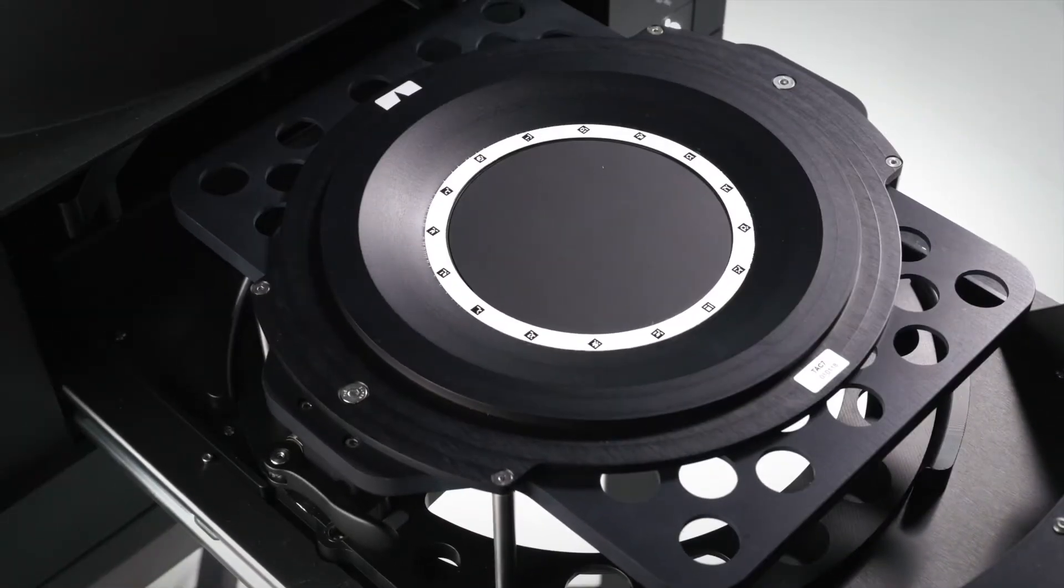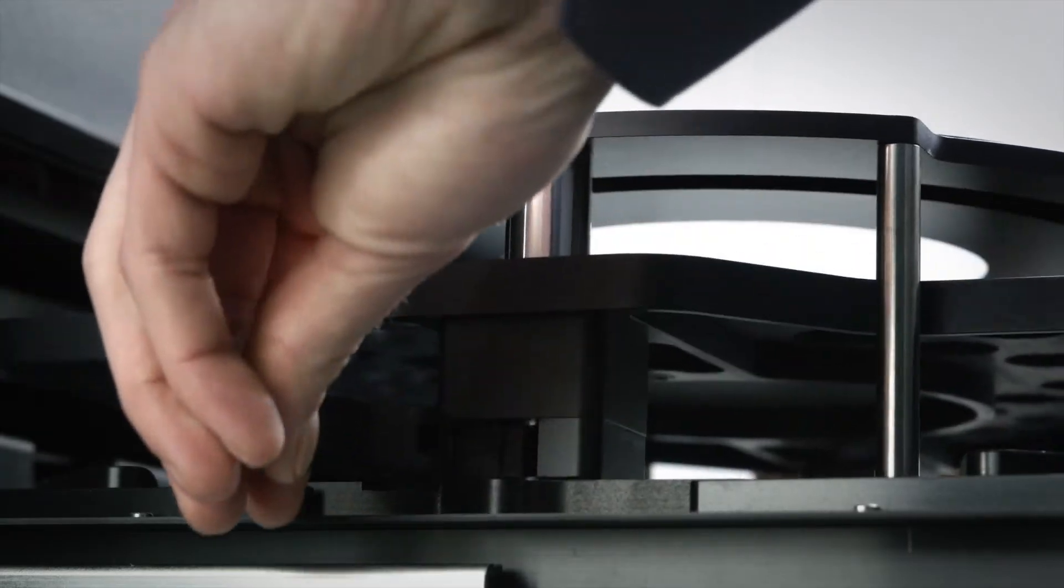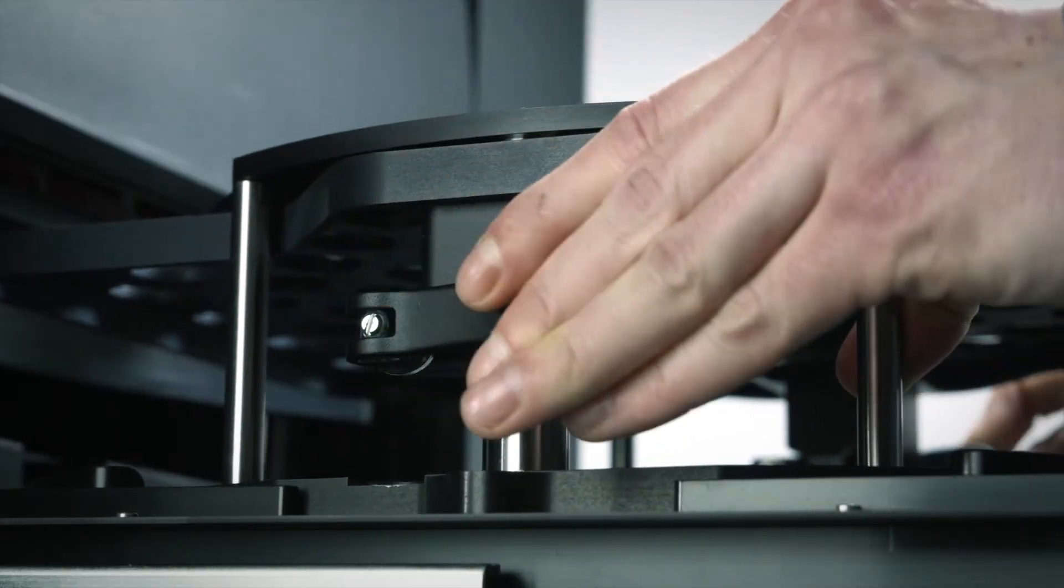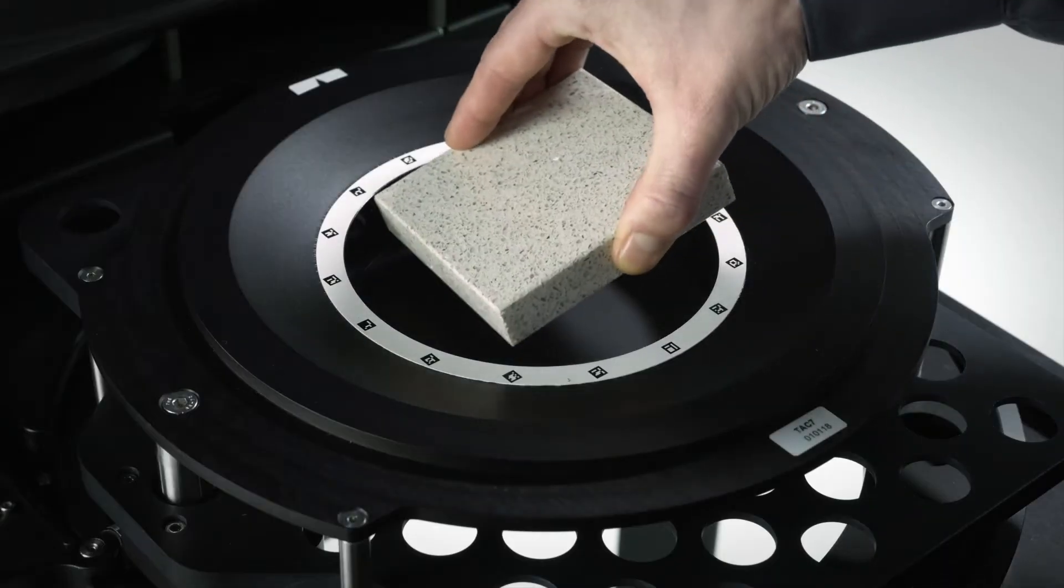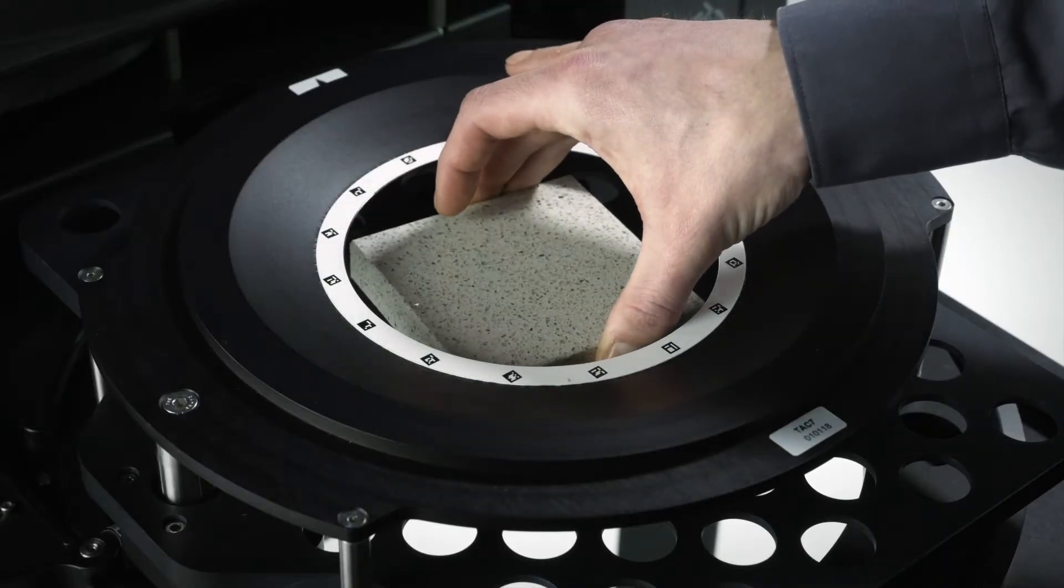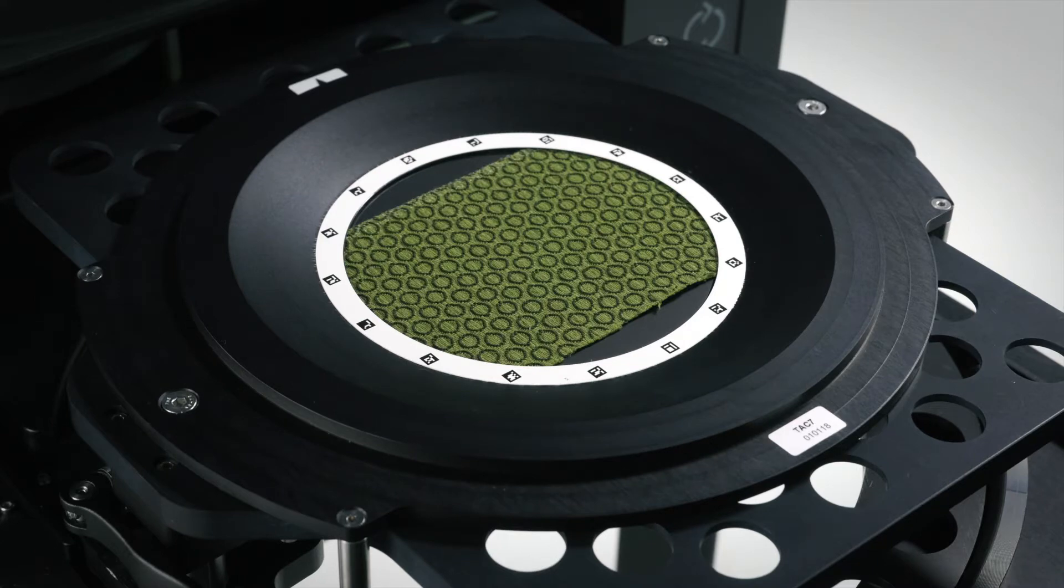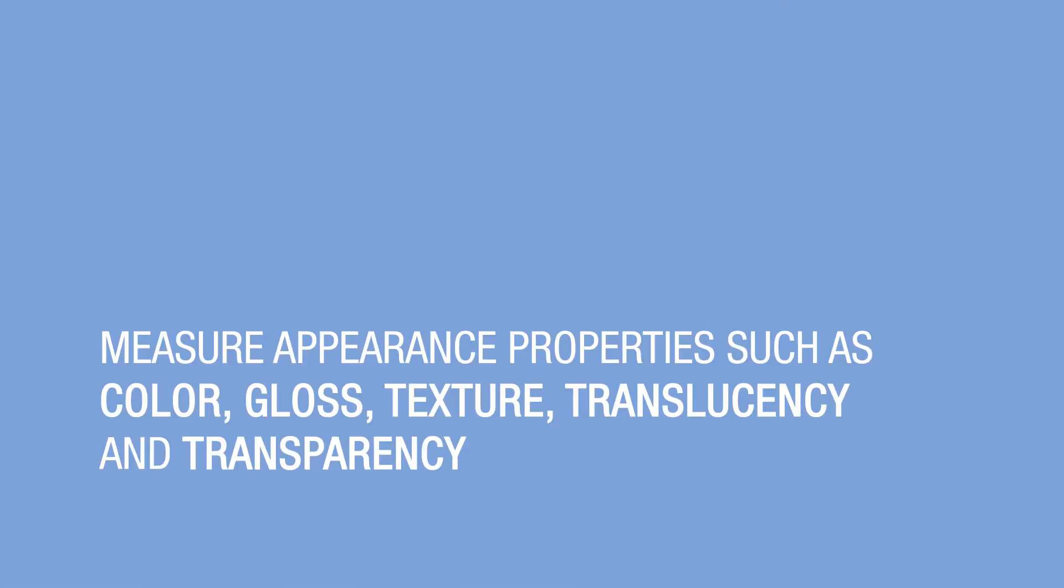Imagine being able to measure and model every appearance characteristic of a physical material in the virtual world. From automotive paints with special effects to leather grains and textiles, it's now possible to go beyond measuring color to capture appearance properties such as gloss, texture, translucency, and transparency.